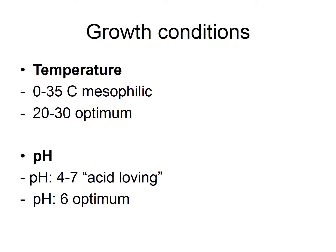The growth conditions of fungi are not as diverse as in bacteria. They are usually mesophiles, growing between 0 to 35°C, with an optimum temperature between 20 to 30°C. Most fungi prefer acidic conditions between pH 4 to 7, with an optimum of pH 6, so they are slightly acidophilic.